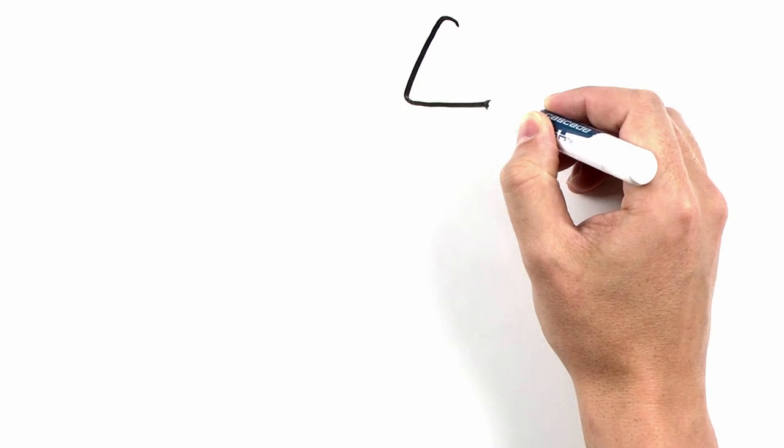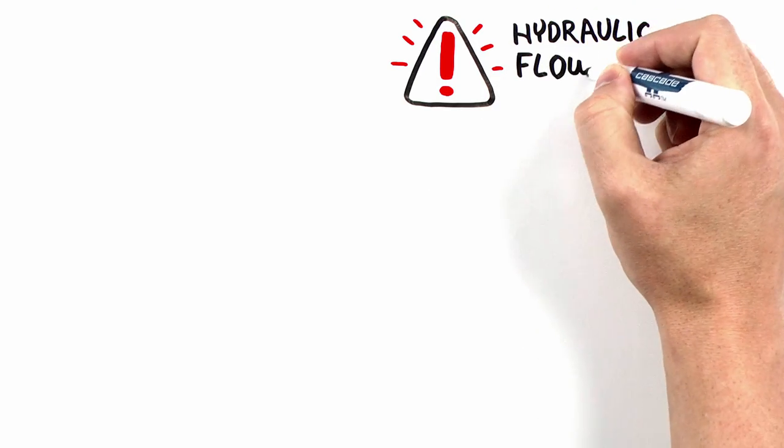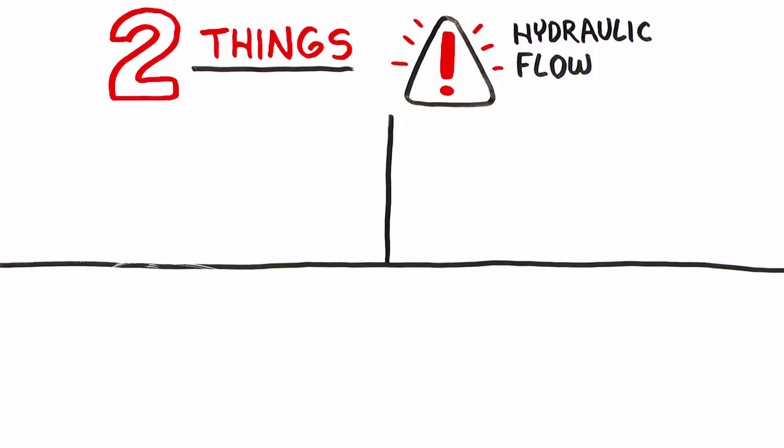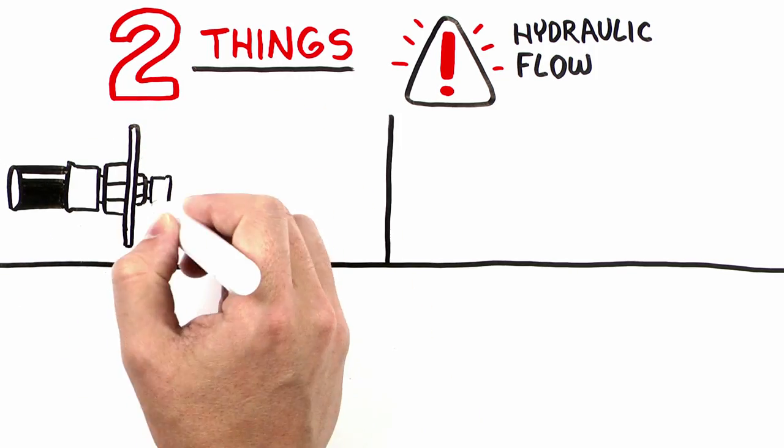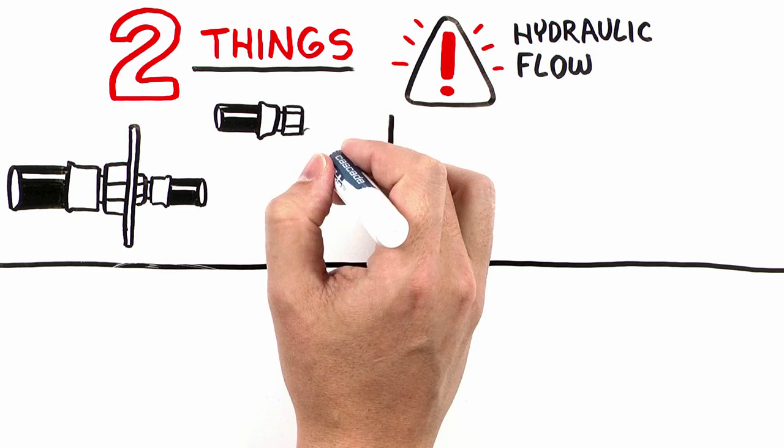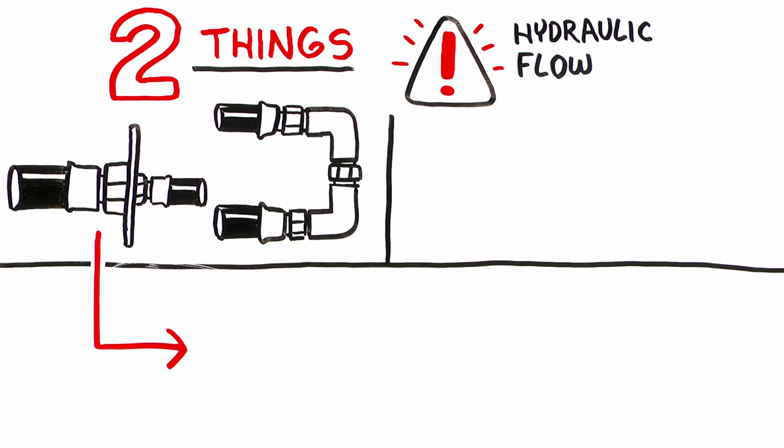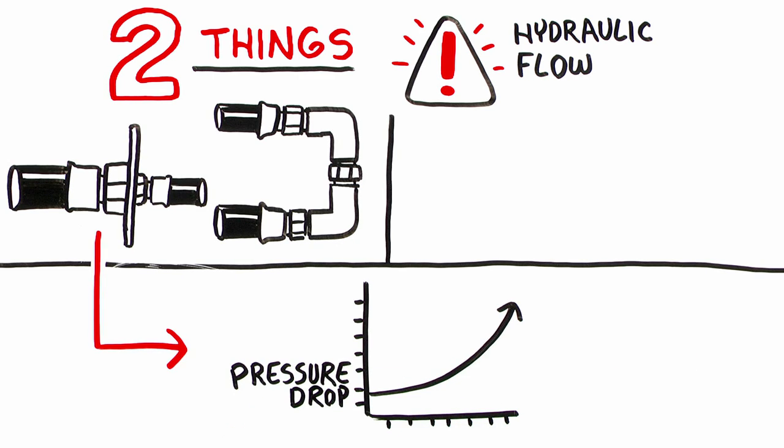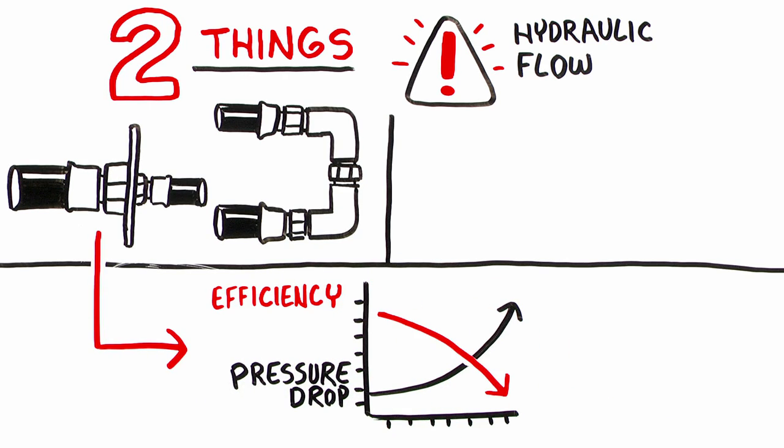Most of the issues commonly experienced are associated with hydraulic flow and typically involve a combination of two things. One, improper plumbing such as undersized hydraulic hosing and less-than-ideal hydraulic fitting configurations. These contribute to increased internal resistance, or pressure drop, within the system. The greater the pressure drop, the less efficient the hydraulic system is. Not a good thing.